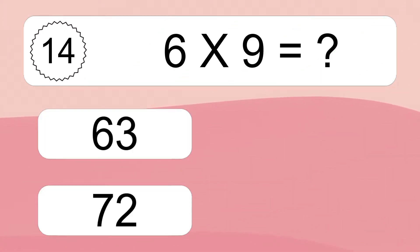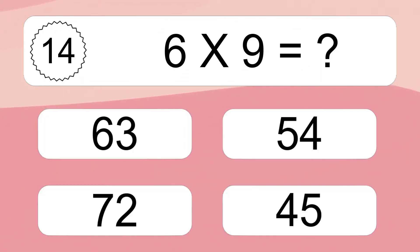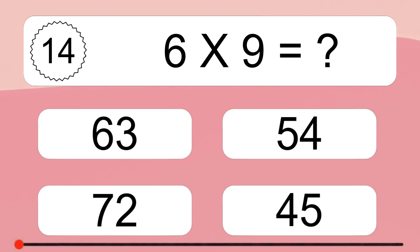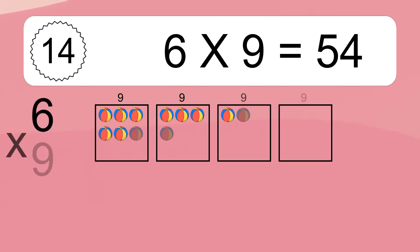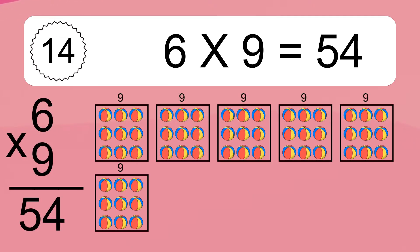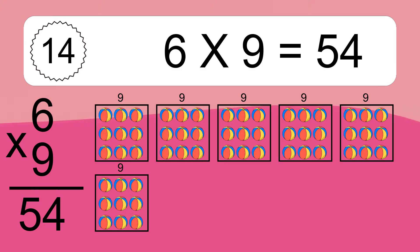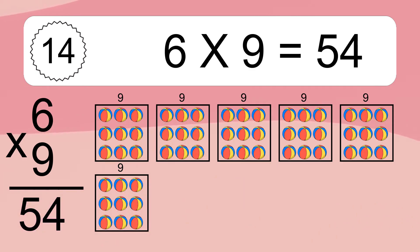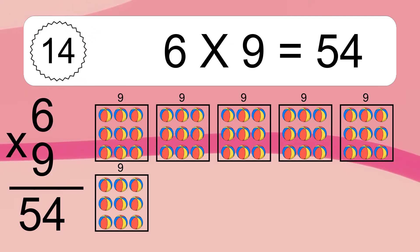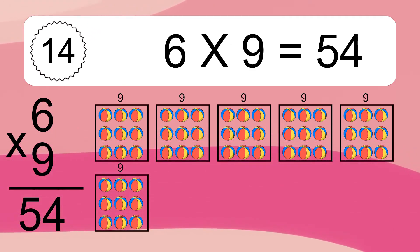6 times 9 equals what? 6 times 9 equals 54. We have 6 boxes, and each box has 9 colorful balls inside. If you count all the balls in all the boxes together, you will have 6 times 9 balls. This equals 54 balls.